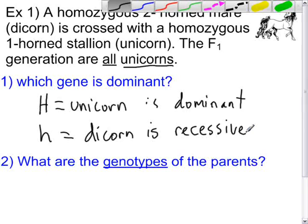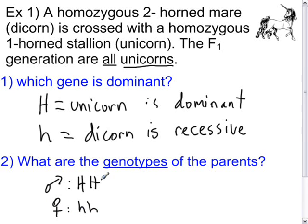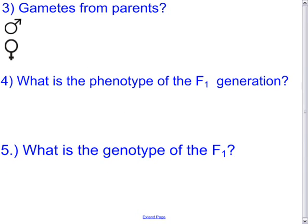What are the genotypes of the parents? Both are homozygous. The unicorn stallion, the male, must be homozygous dominant — having both dominant genes. The female dicorn must have both recessive genes. So the male is homozygous dominant (HH) and the female is homozygous recessive (hh).